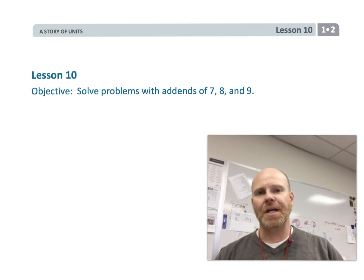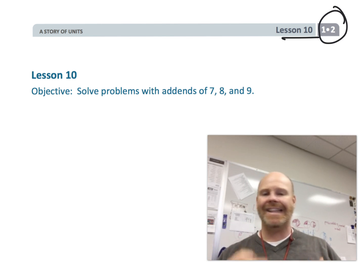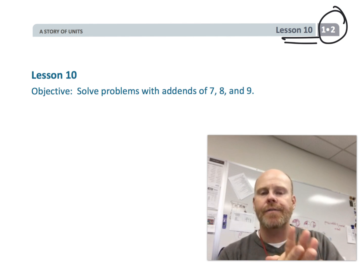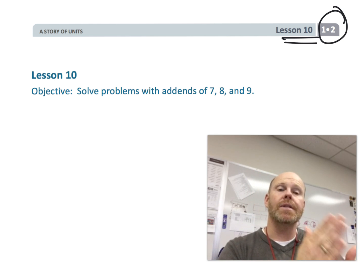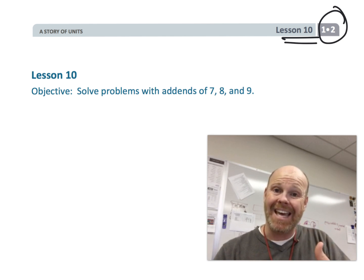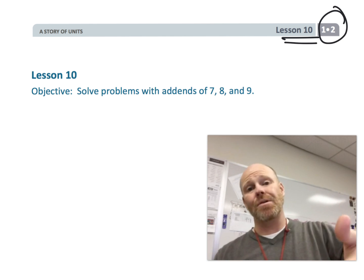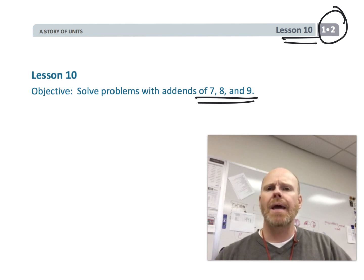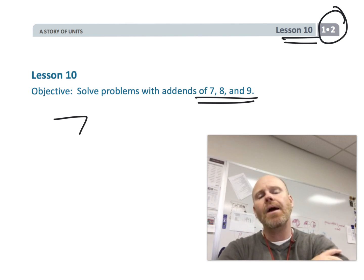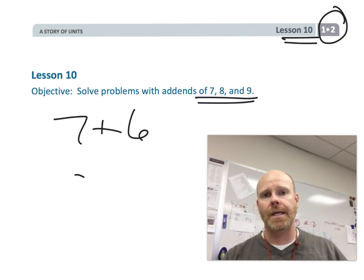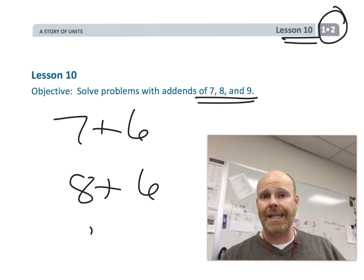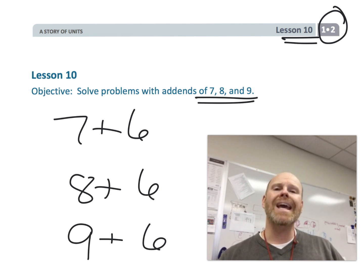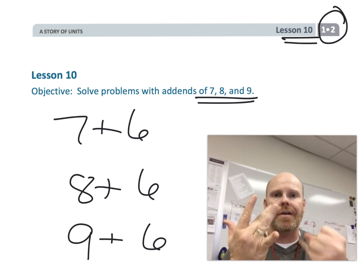This is first grade module 2 lesson 10, and in this lesson we're putting it all together in terms of adding using the strategy of making a 10. Now we're going to throw in 7 as one of our potential add-ins, and basically what that does is allow students the opportunity to efficiently get the answer to a simple addition problem in a way other than just counting on their fingers.